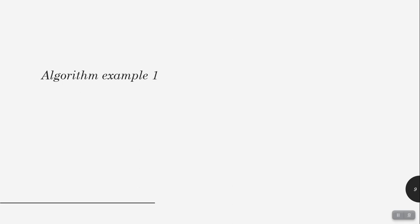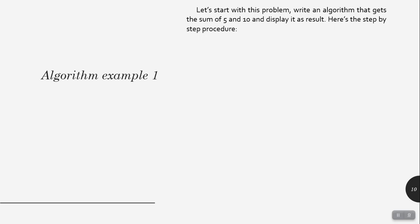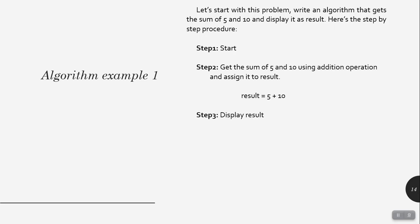Let's start with the first algorithm. The problem: write an algorithm that gets the sum of 5 and 10 and displays it as a result. Step 1 is to start. Step 2: get the sum of 5 and 10 using the addition operation and assign it to 'result' — so result is a variable, result = 5 + 10. Step 3: display the result. Step 4: stop.